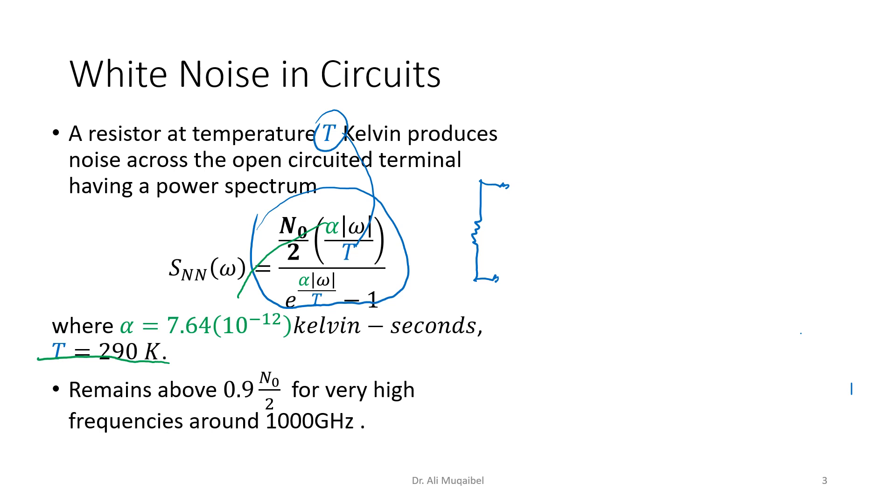If you substitute T equals 290 as a function of frequency ω, you'll find that it has an almost constant value. If we sketch this expression using MATLAB for given values of f, ω, T, and α, we'll find that relative to n₀—if we make n₀ equal to one, then 0.5—up to a frequency of 10¹² we only go to 0.9 of that value, which is 0.45 of n₀.